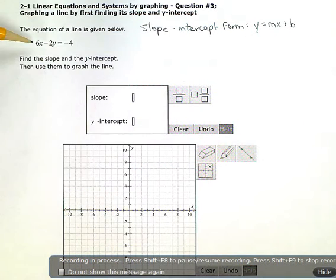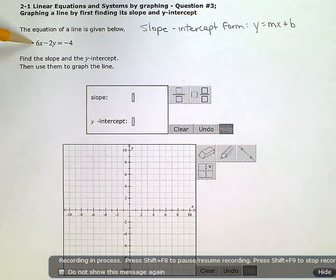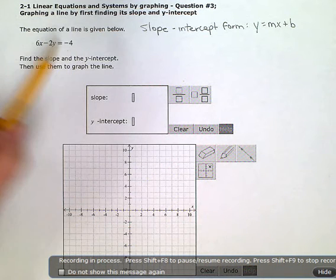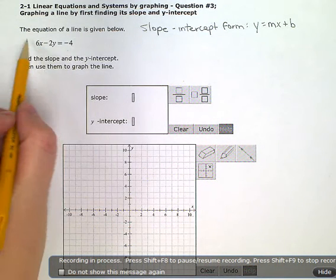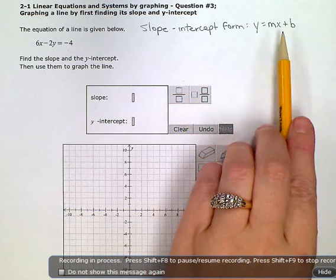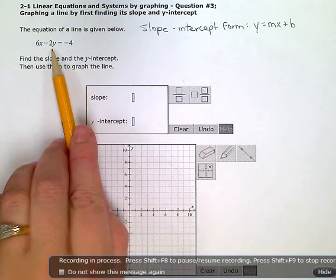If you look at this equation right now, it's in standard form. I have both the x and the y on the same side of the equation, and the constant on the other. So this form doesn't help me to see the slope and the y-intercept. So I need to rearrange this equation first.